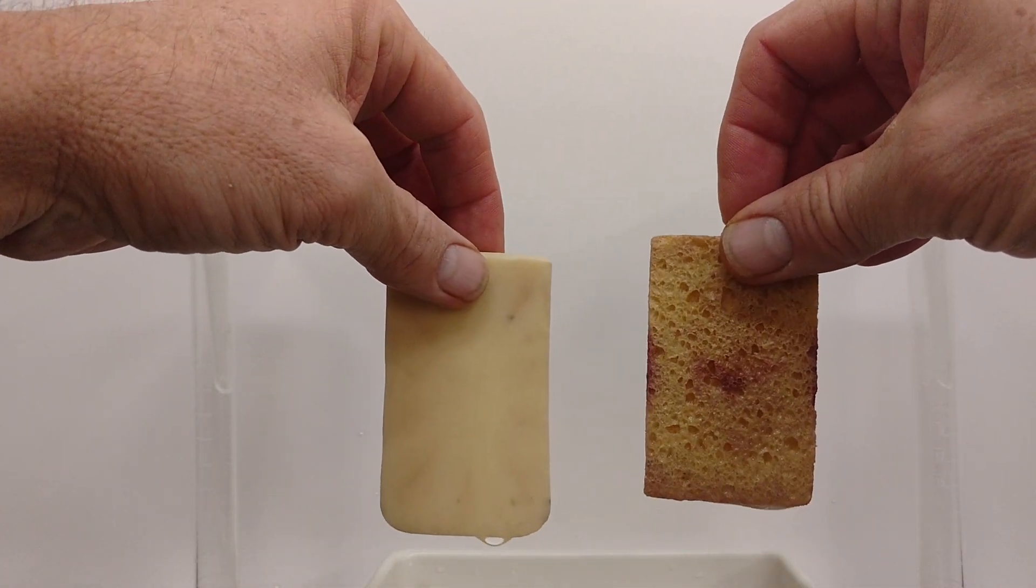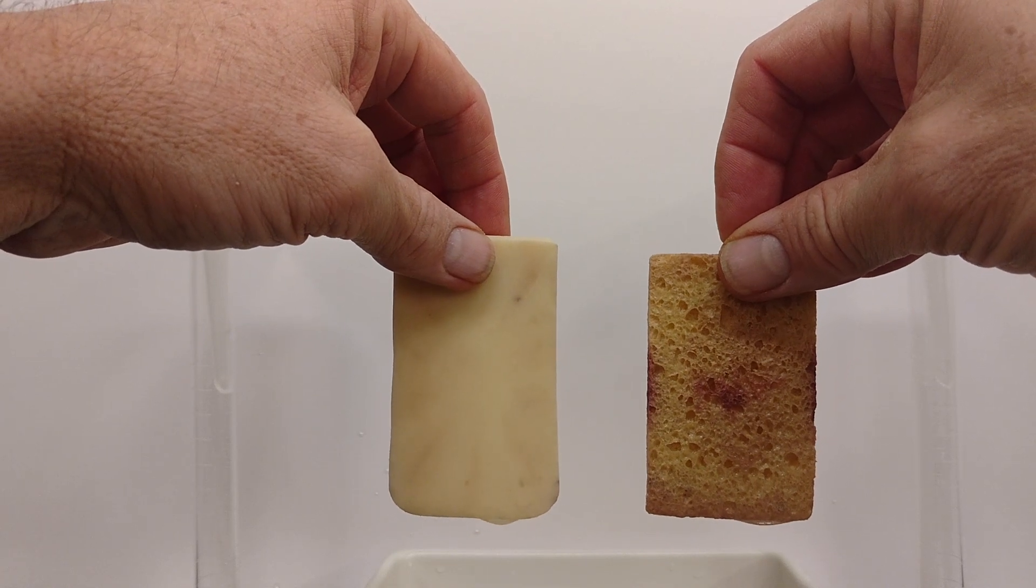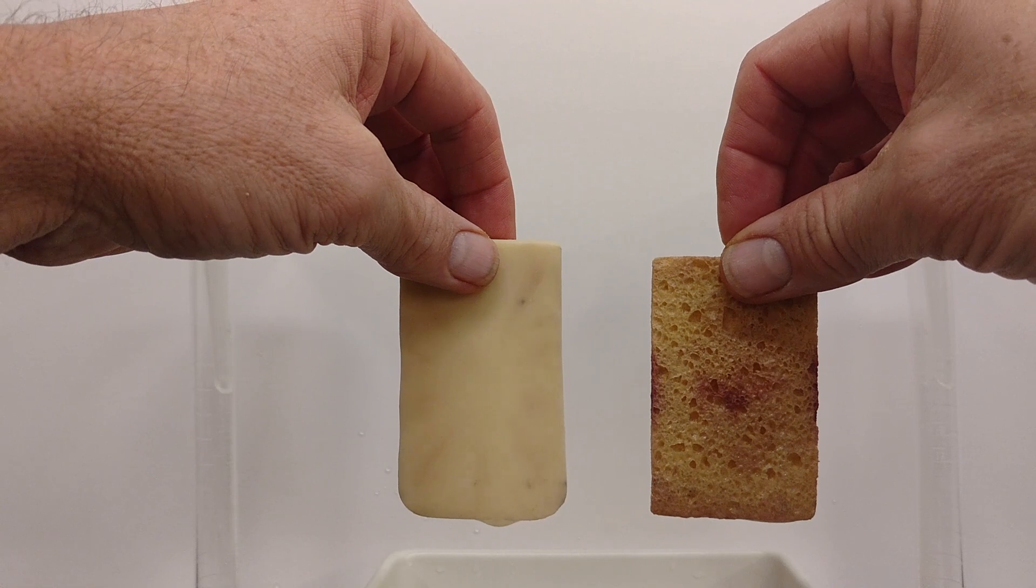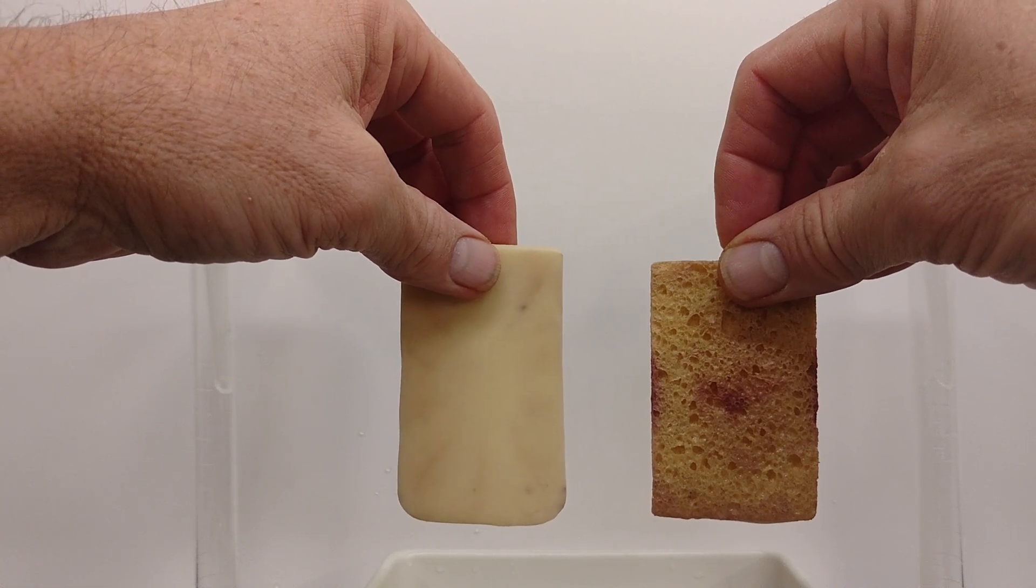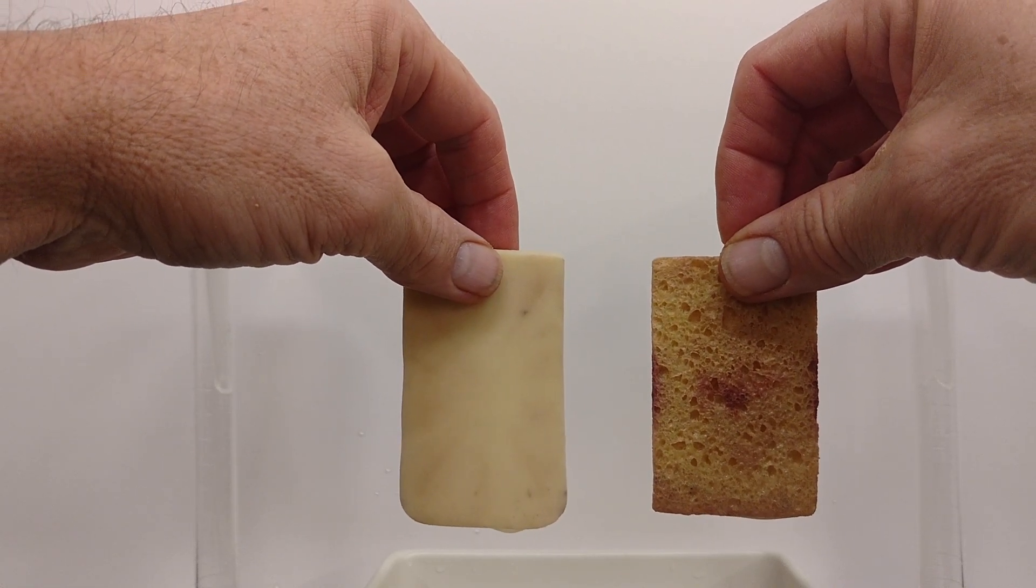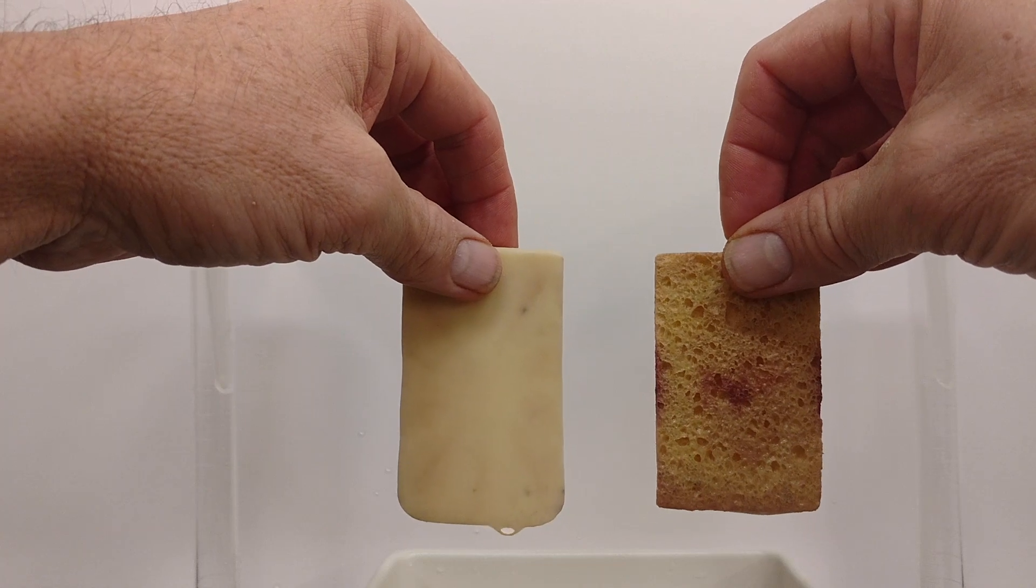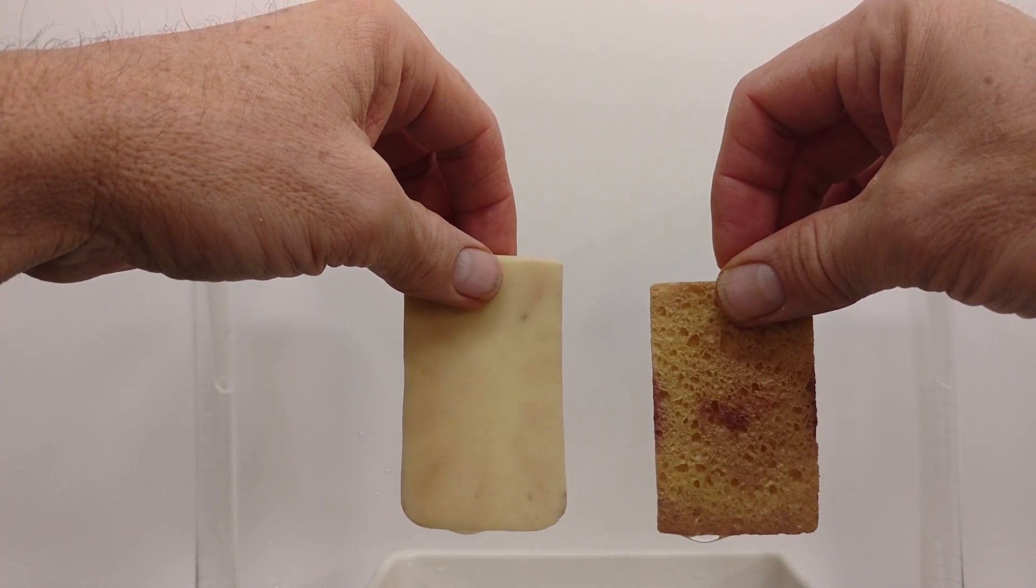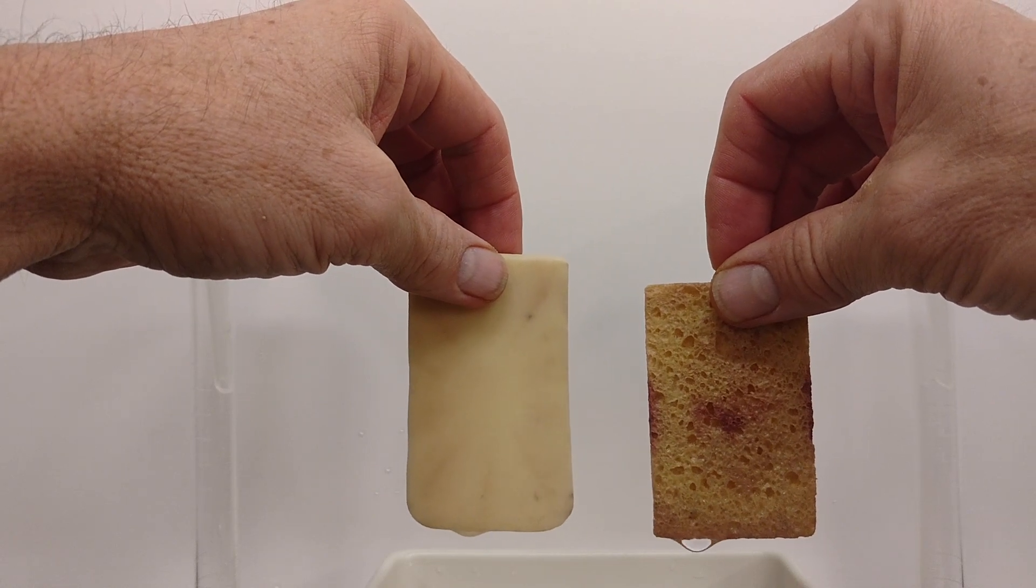We're going to use these two sponges as models to represent the soil. They're similar in that they both have a solid matrix—in this case the fibers of the sponge, and in the case of the soil, the actual sand, silt, and clay particles. In between the particles and fibers there are spaces or voids. These voids can be filled with either air or water.